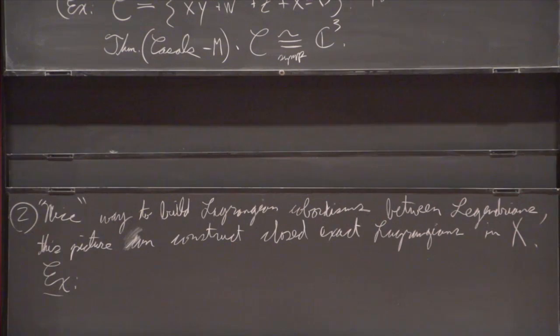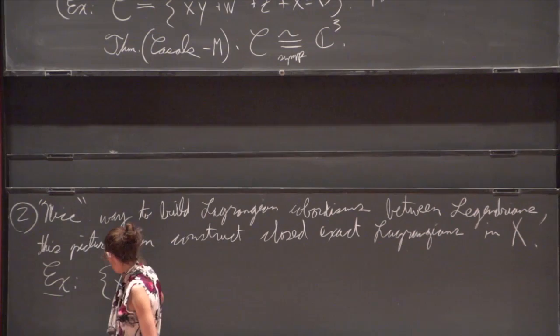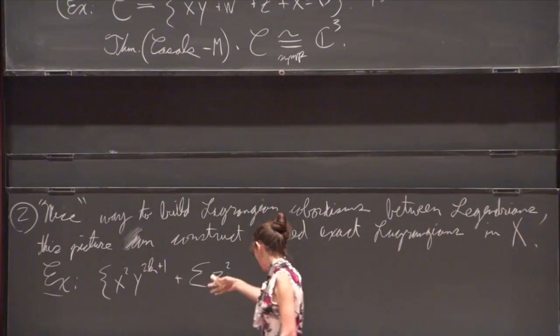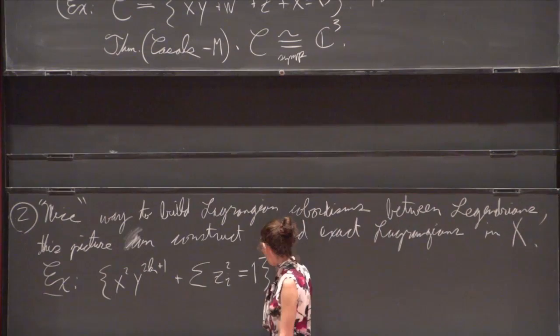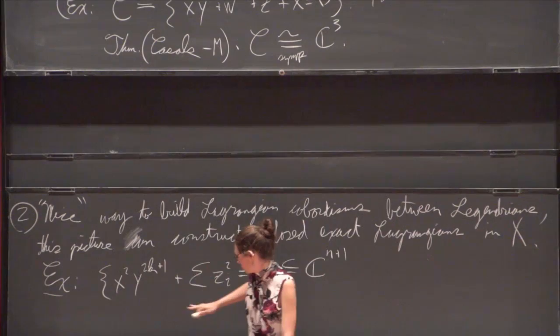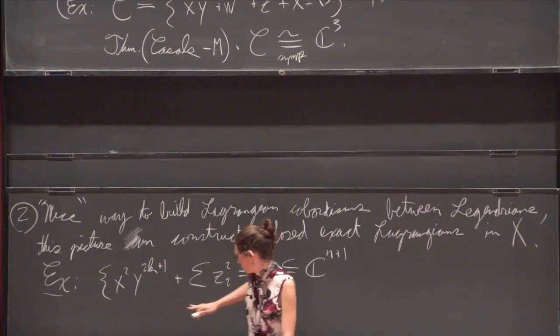So as an example, if you take the manifold X squared Y to the 2K plus 1 plus and stabilize it in the sense that Elsa was saying yesterday, this is a subset of C^(m+1), some affine hypersurface. It's kind of a Milnor fiber of a non-isolated singularity.